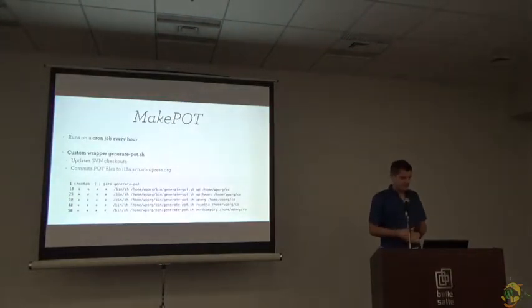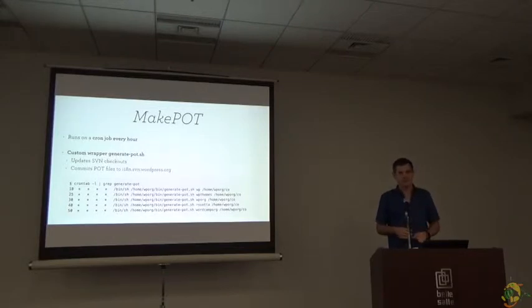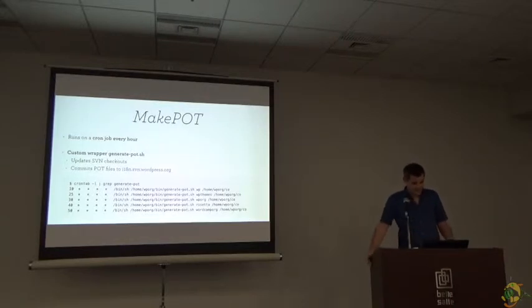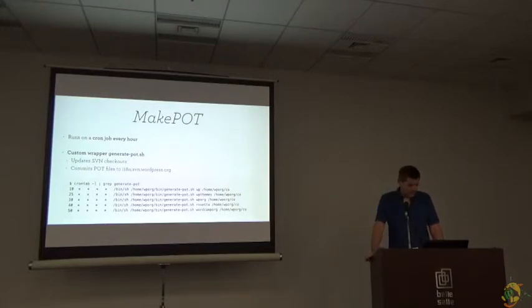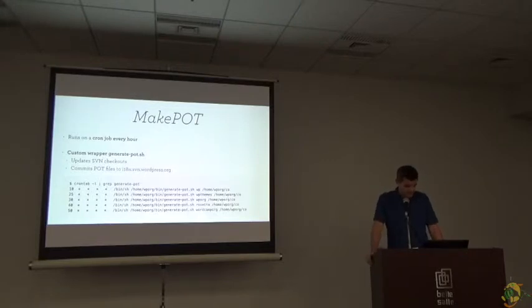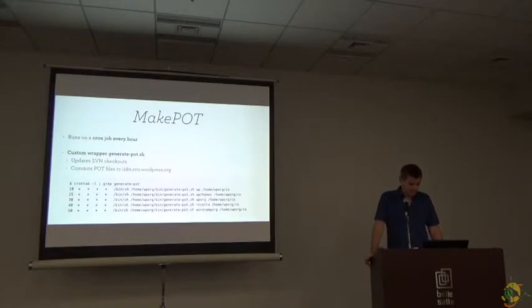This MakePot script is run by a cron job. A cron job is basically a time-based job scheduler where you can define a specific task to run at a specific time. That's what we are using on WordPress.org. These MakePot commands are used in a custom shell file called generate-pot.sh, which also updates the SVN checkouts and finally commits the POT files to our SVN repository.